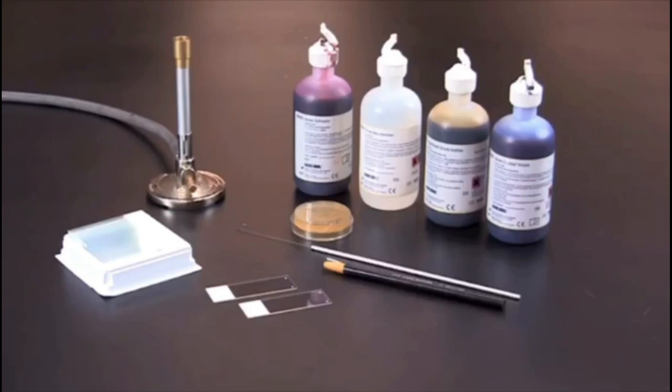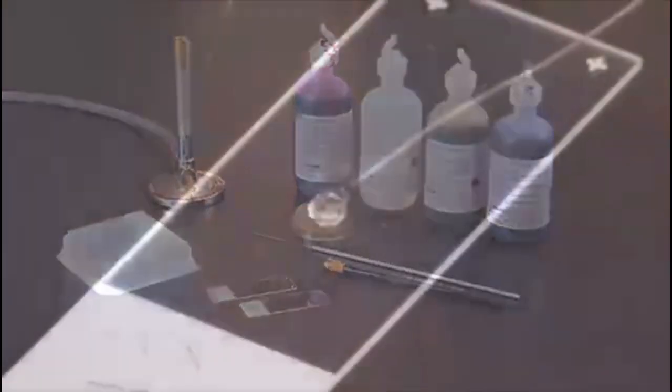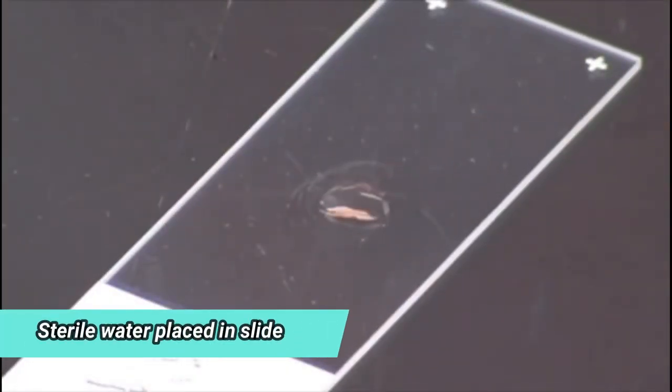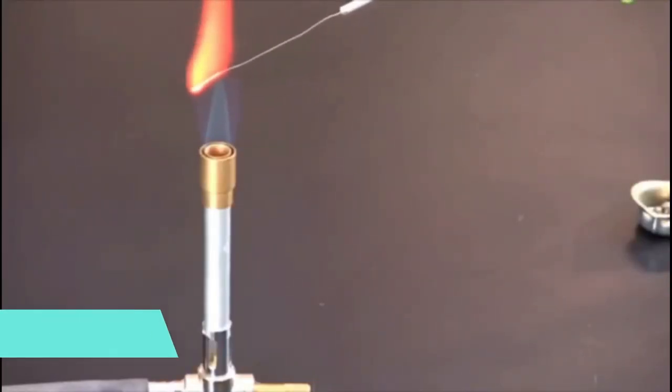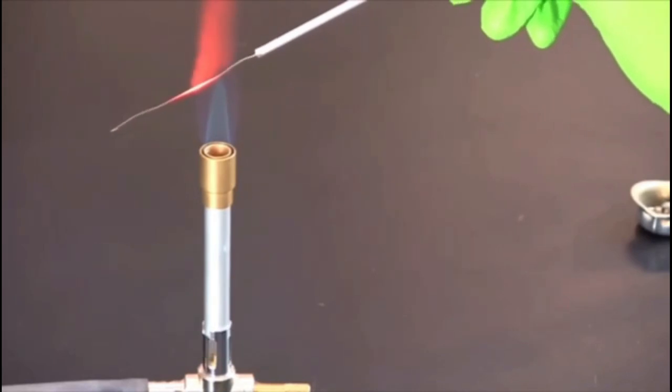During this gram staining process, the materials needed are a Bunsen burner, a loop, a slide, and gram staining reagents. Sterile water are placed in the slide using sterile loops. Next, sterile loops are used to transfer a colony of bacteria from the agar plate to the slide and was heat fixed gently.